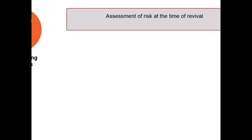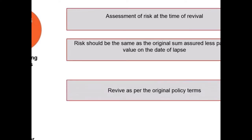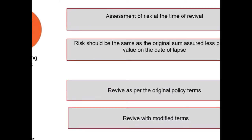Let us now learn what underwriting formalities are required for policy revival. These are carried out at the time of revival of the policy, such as assessment of risk at the time of revival. Risk should be same as the original sum assured, less paid-up value on the date of lapse. The underwriter has the following options: first, to revive as per the original policy terms; second, to revive with modified terms; and third, to decline the revival.